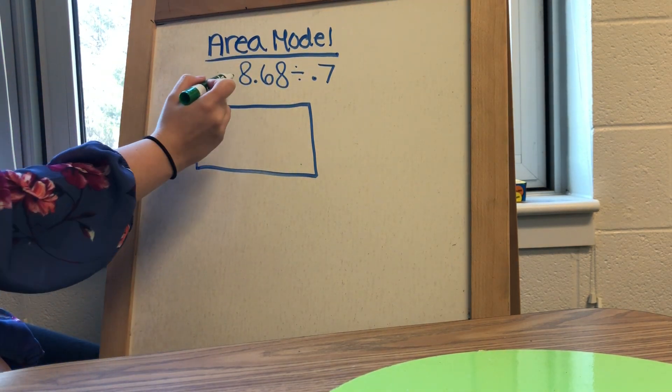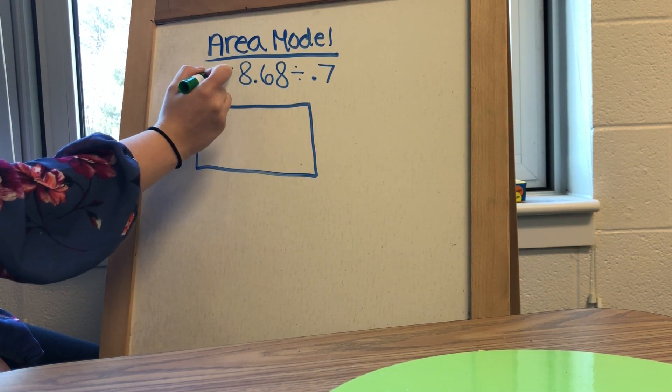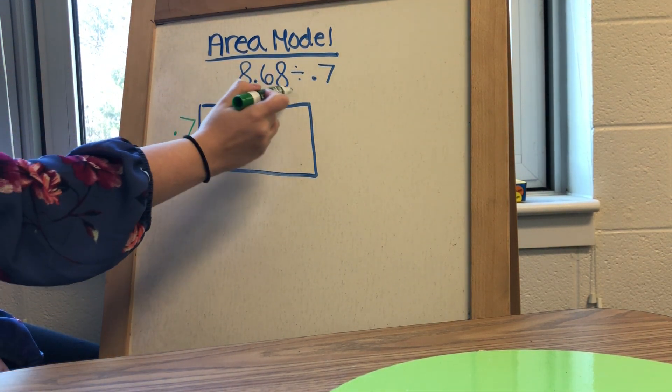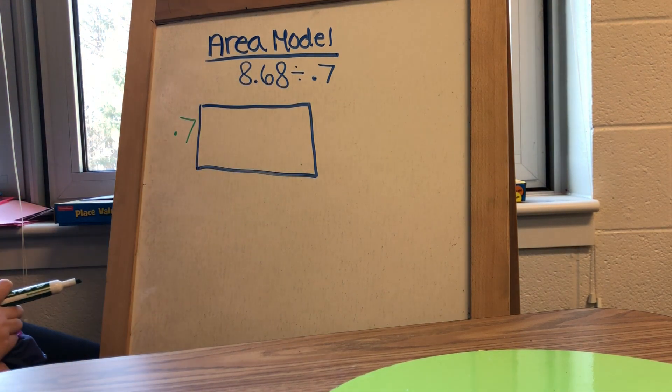The middle of your box is going to end up adding up to 8 and 68 hundredths. And what the answer of this division problem is, is going to be whatever is going to be on top of your box.